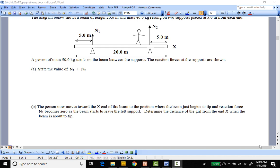So here we have a person that's standing on a beam between two supports, the reaction force at the supports are shown. So we have a normal force on the left, normal force on the right between the beam and the fulcrums there. And it says this first state the value of N1 and N2, well that's fairly straightforward.